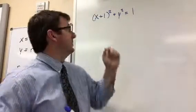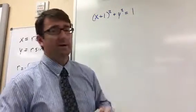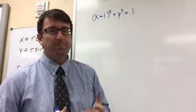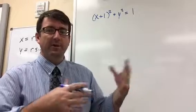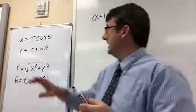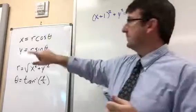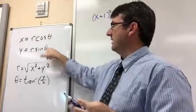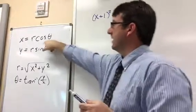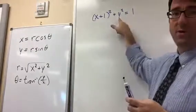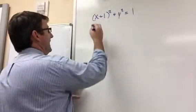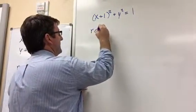Number three: we have the equation (x + 1)² + y² = 1, and we want to convert this from rectangular to polar form. We're going to use the equations x = r cosθ and y = r sinθ, and just replace x with r cosθ and y with r sinθ.